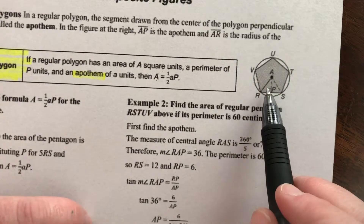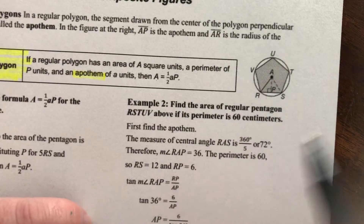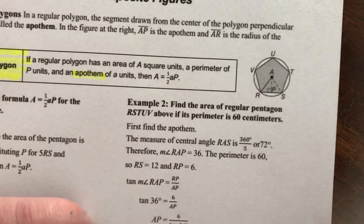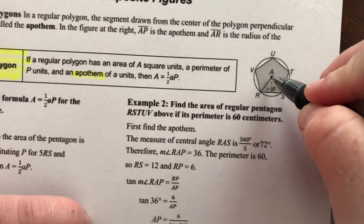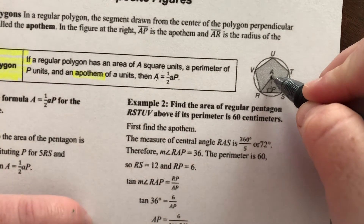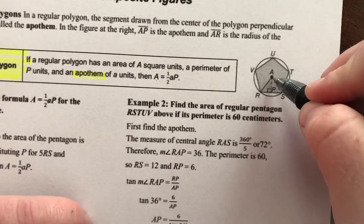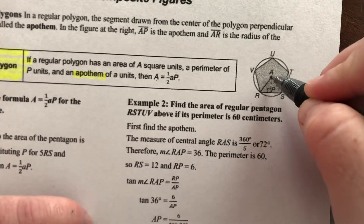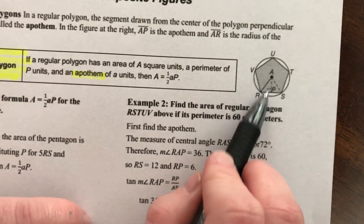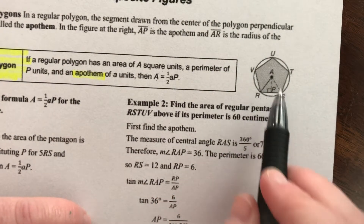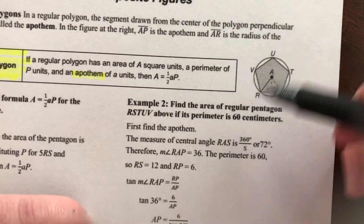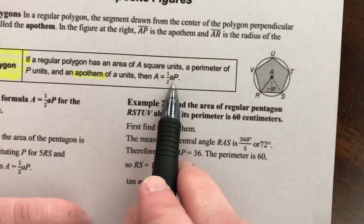So if one side was 10, we'd multiply 10 times 5, giving us a perimeter of 50. The apothem is the distance from the center of your shape out to one of the sides, perpendicular to that side. So the distance from A to side RS — that length is the apothem. It's perpendicular to the side.